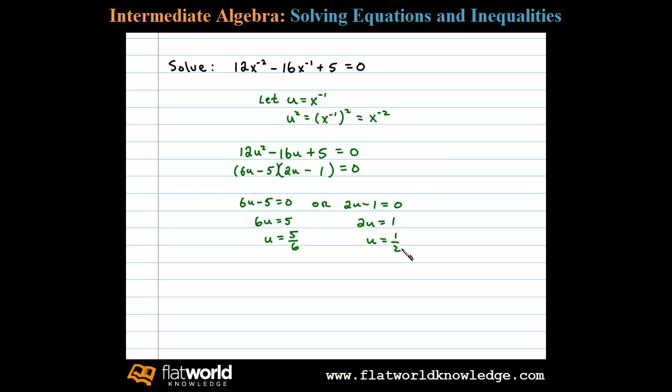Now at this point, we back substitute. Remember, u equals x to the minus 1 power, so we can write x to the minus 1 equals 5 sixths, or x to the minus 1 power equals 1 half. Now by definition, x to the minus 1 power is 1 over x, so 1 over x equals 5 sixths, or 1 over x equals 1 half.